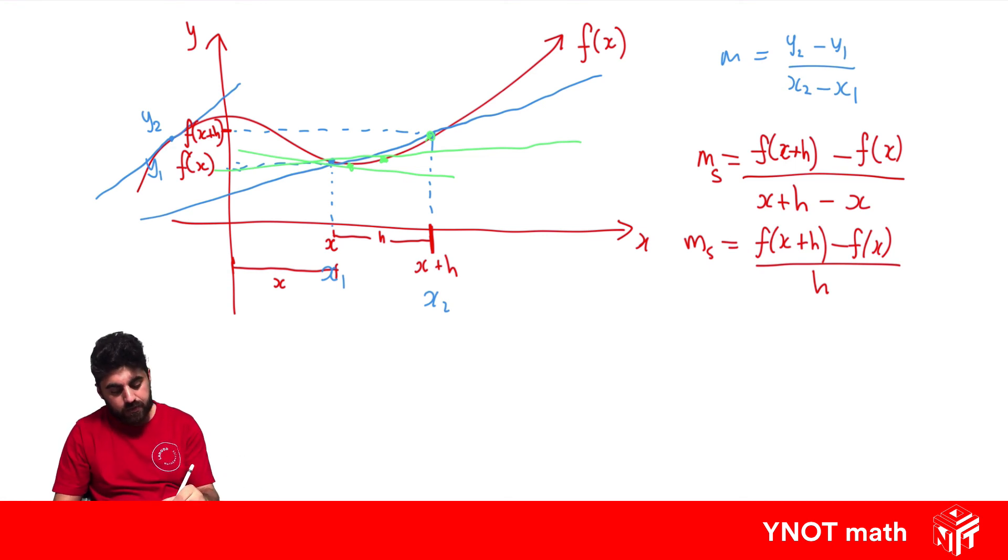So what we can say is that the gradient of the tangent is actually going to equal the limit as h approaches zero of the gradient of the secant. So as h approaches zero, as it becomes zero, our two points end up on top of each other, and we end up with a gradient of a tangent. And this gradient of the tangent is what we define as our first principles.